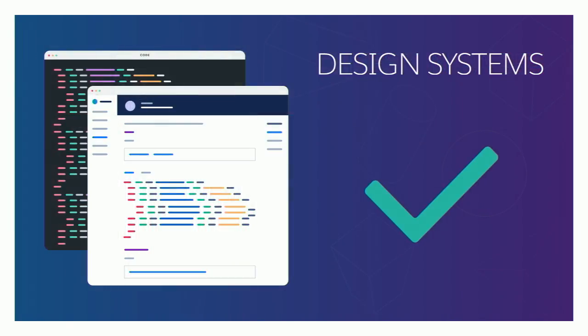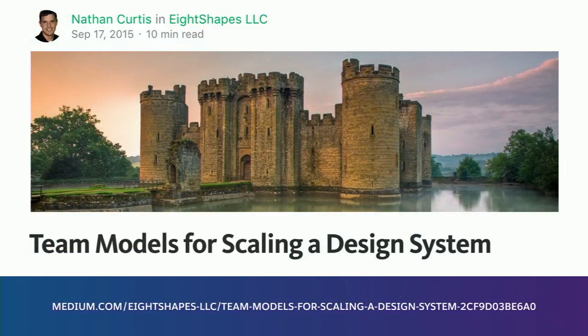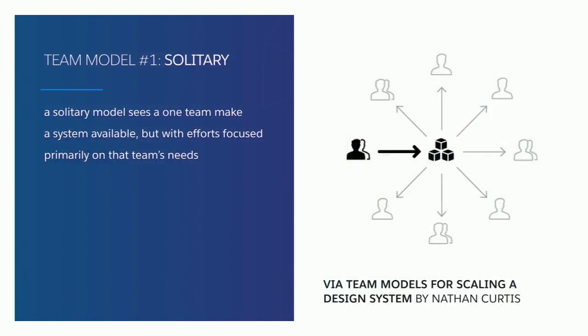So let's say you've decided to create a design system retroactively in your organization. You have to figure out your team. Nathan Curtis wrote an article called 'Team Models for Scaling a Design System' in which he goes over three types of team models he's observed. The first is 'solitary' — one or two people create their own team, build what they want, and distribute it. You can use it or not. It doesn't really scale; it's kind of like the overlords.